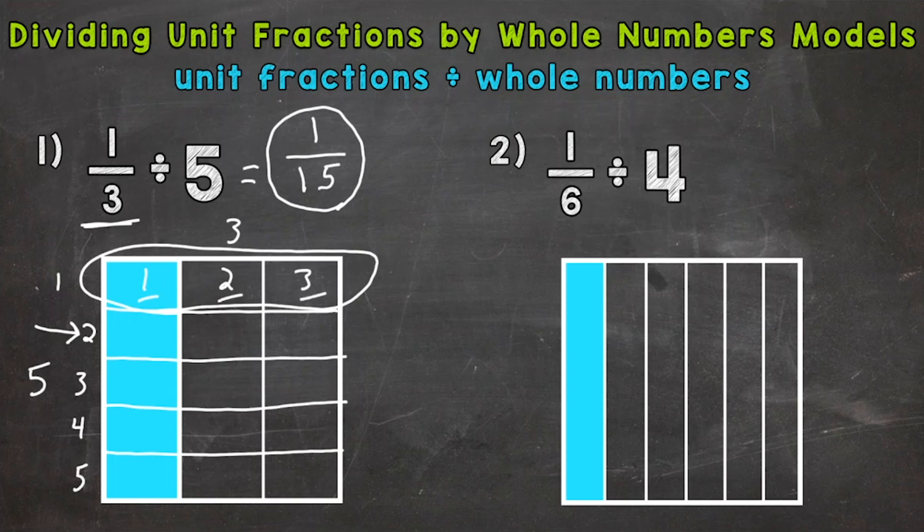1, 2, 3, 4, 5, so on and so forth. There's 15 total pieces there. So that model represents, we started with 1/3 and we split or divided that 1/3 into 5 equal groups. And we ended up with 1/15.